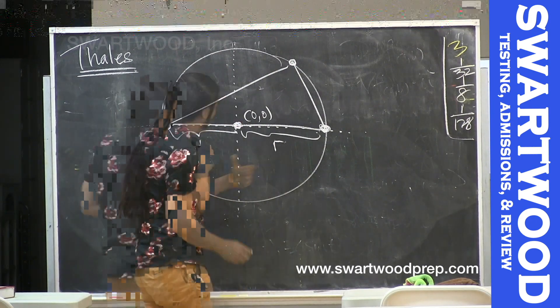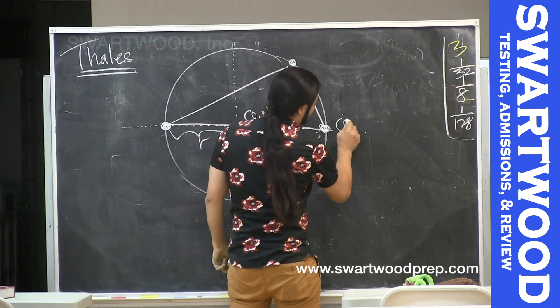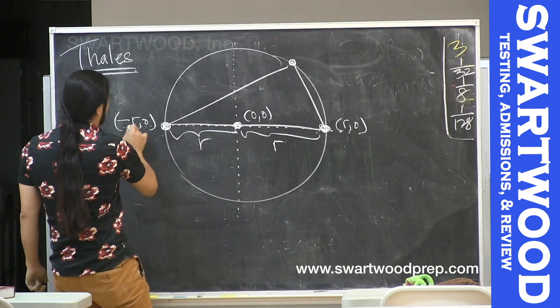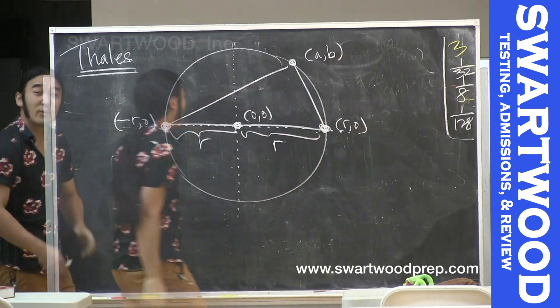Life is easy because these are radii so their length is gonna be R. So the coordinates here would be (R,0) and (-R,0). This guy we're just gonna arbitrarily call (a,b).